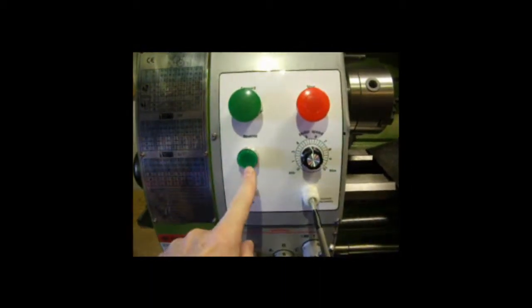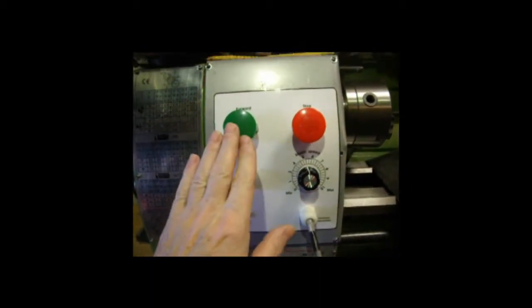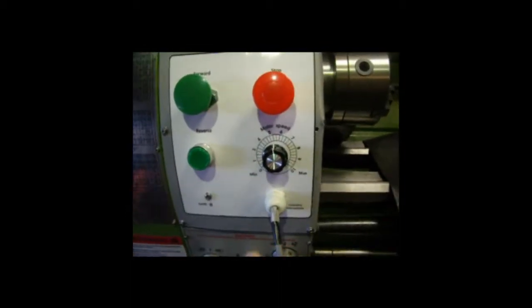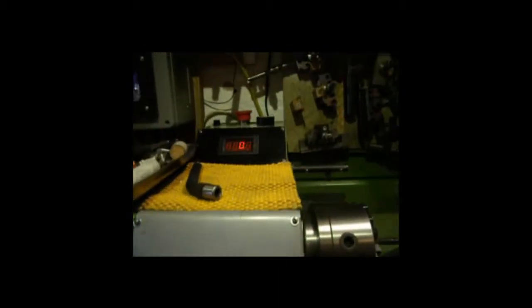And the other switch here is a reversing switch. I made that little small one so 9 times out of 10 I'll hit that rather than that one. Obviously then you've got the speed controller which controls the speed at the back there.